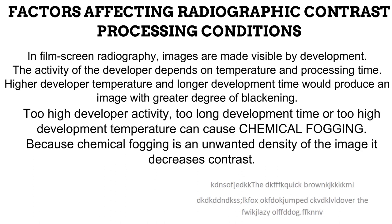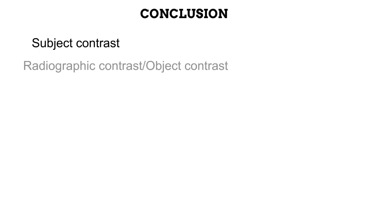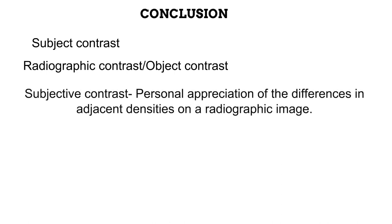This video has looked extensively at one type of contrast. To conclude, there are three types of contrast. First is subject contrast — the difference between the thickness of structures within a part. Second is radiographic or object contrast — the difference in optical densities recorded on different parts of a radiograph, which this video is based on. Third is subjective contrast — a personal appreciation of differences in densities recorded, which varies from observer to observer. What one person considers high contrast can be seen as low contrast by another, depending on the observer's experience, level of fatigue, eyesight, and the ambient lighting of where the image is being viewed.